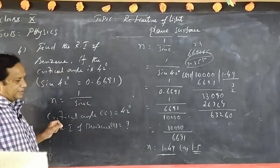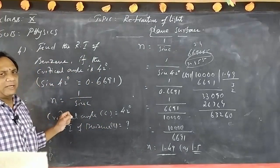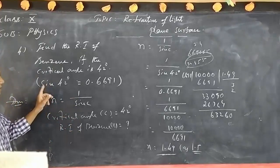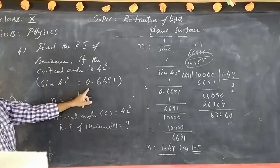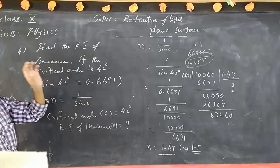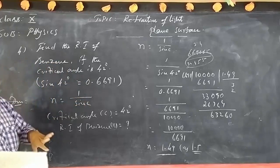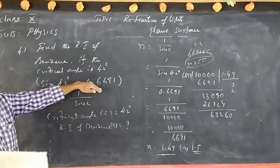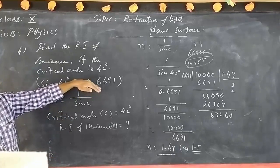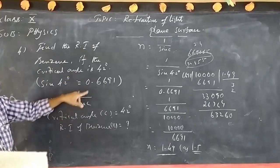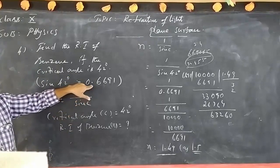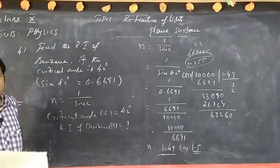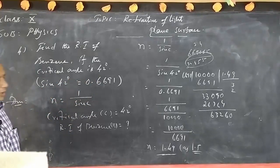So if the critical angle is given, we calculate the refractive index using n = 1 / sin C. These trigonometric values should be remembered. Generally they will be given in the question paper, but if not, they must be memorized. For example, 0.669 corresponds to sin 42 degrees.